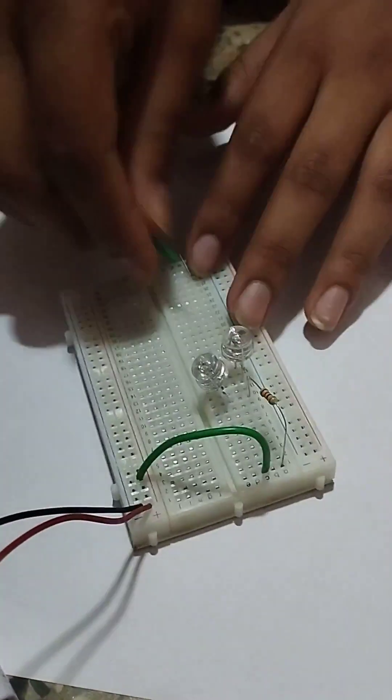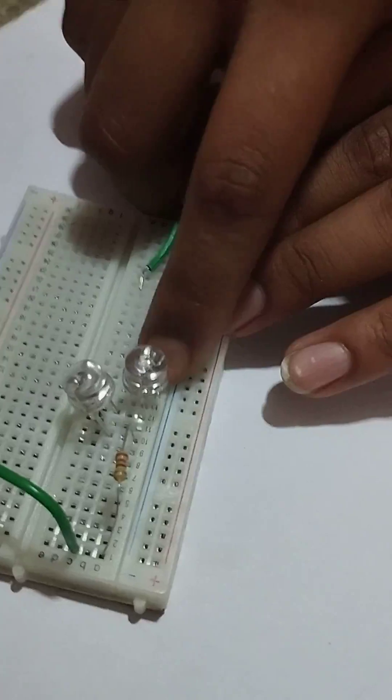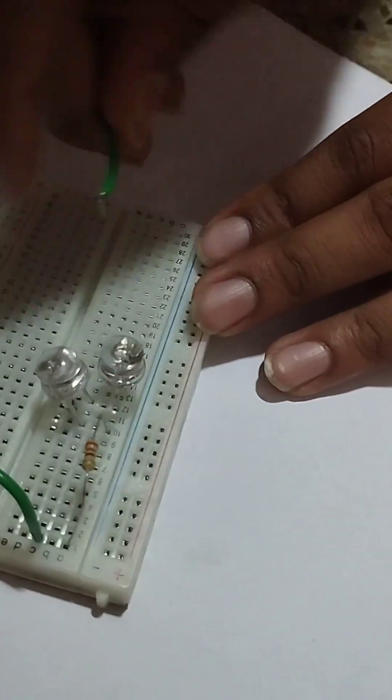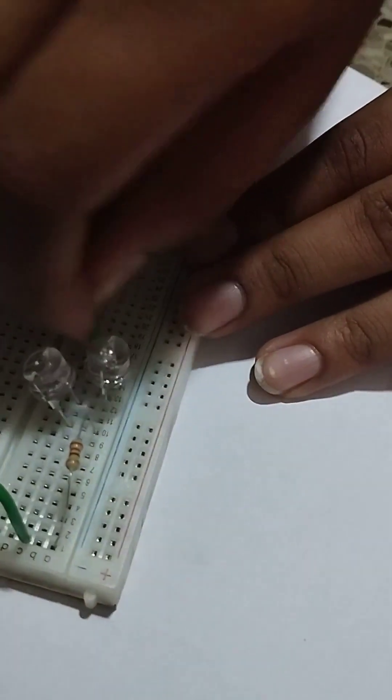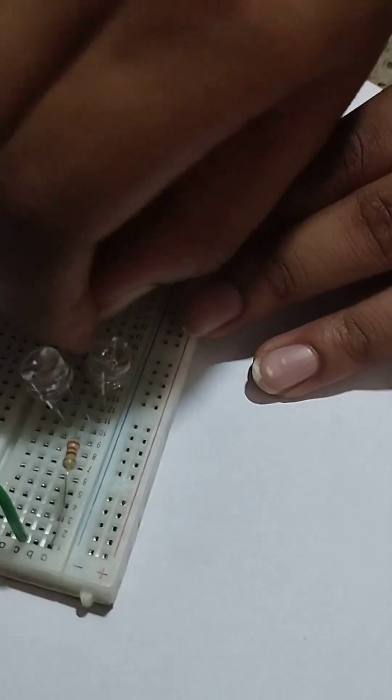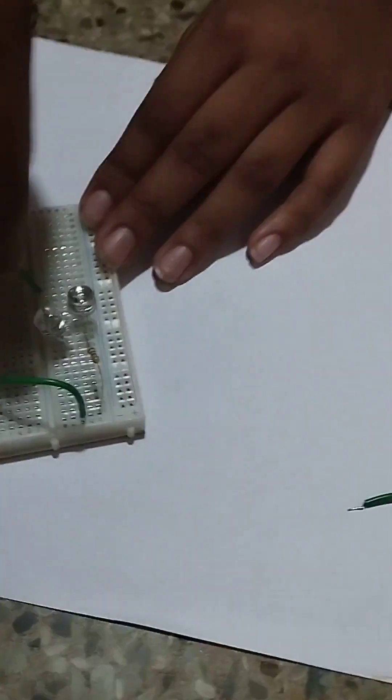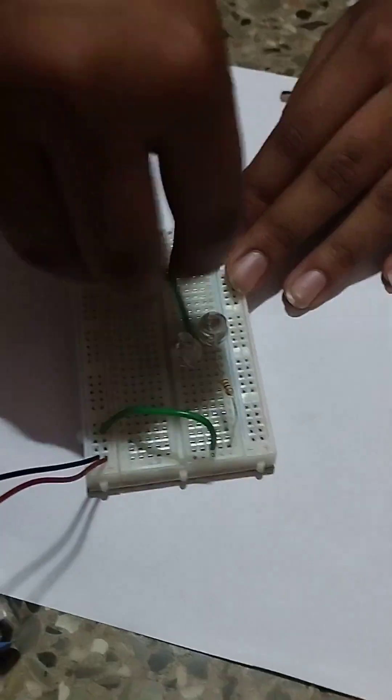Next take another wire. The second bulb's negative is connected in the 14th row. So I am connecting in the 14th and I am connecting this to the negative.